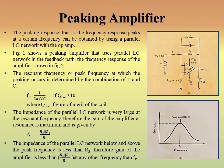The gain of the amplifier is less than Rp/R1 at any frequency other than Fp. The gain is maximum at the peak frequency and drops on both sides — either left or right — as seen from the diagram. This is how the operational amplifier is used as a peaking amplifier.